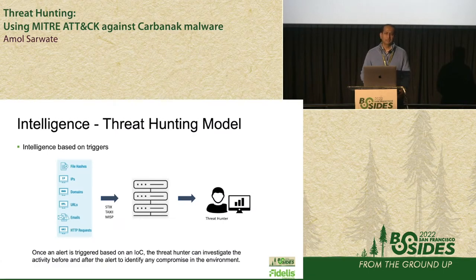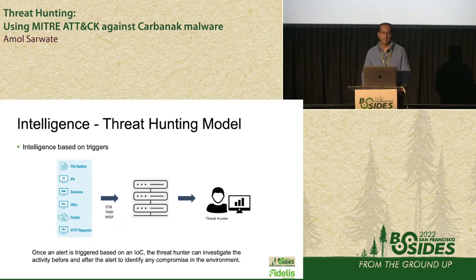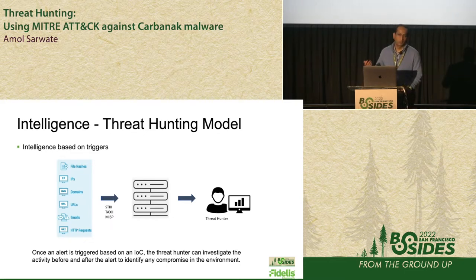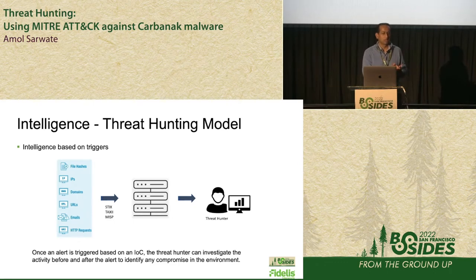When people talk about threat hunting, there are three different models. The first, which has been used for a long time, is intelligence-based threat hunting. Organizations get open source or closed source feeds that they buy on intelligence — a feed of bad file hashes, files that are bad, so you can see if your network, your emails, have those files.